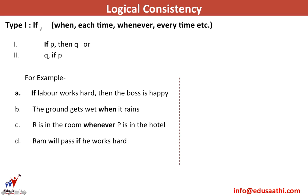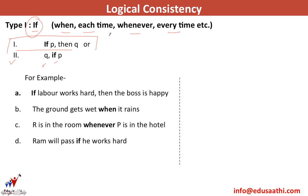Let's take up the first connective: 'if.' The kind of question asked is 'if P then Q,' or alternatively 'Q if P.' For example: if labor works hard, then the boss is happy; the ground gets wet when it rains; R is in the room whenever P is in the hotel; Ram will pass if he works hard. Note that 'if,' 'when,' 'each time,' 'whenever,' and 'every time' all belong to the same family, so we use the same set of rules for all these connectives.